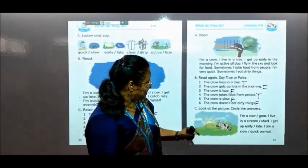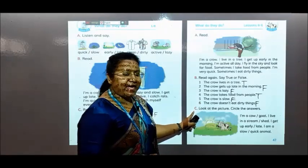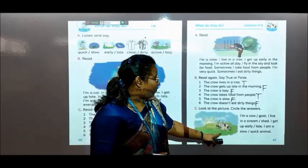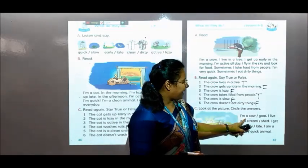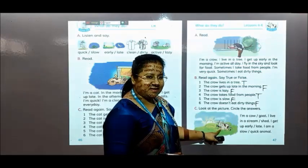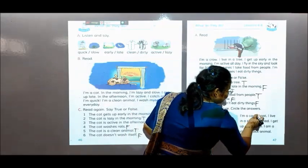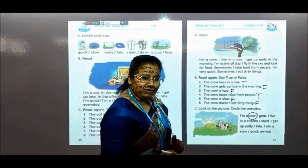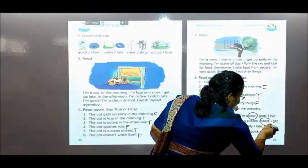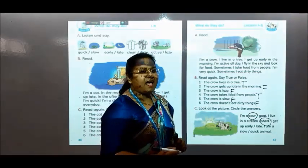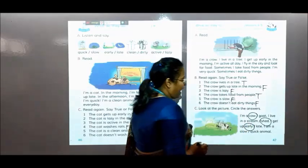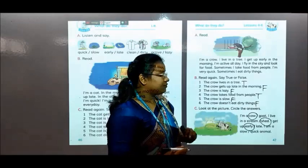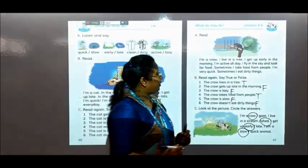Okay friends, students, did you complete? I hope so. Now we will solve activity C. You look at the picture in your textbook. There is a picture — you have to understand what the picture is telling. Here is written: you need to circle — I am a cow or goat. I am sure because this is a cow, so you can circle cow. I live in a stream or shed — the cow lives in a shed. I get up early or late — I get up early. I am slow or quick — I am a slow animal because the cow works slowly, not so fast, so you will circle slow. Okay dear students, did you understand about unit 23? About two animals.